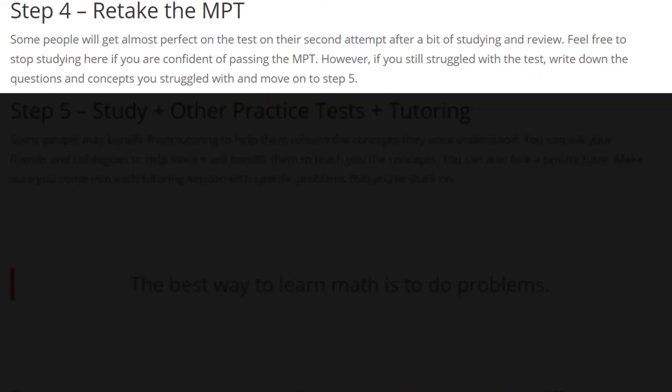Now that we've studied and targeted our weaker areas, we can retake the practice test. We had a baseline, and let's say we failed or barely passed the first time — we can retake it and see how we're doing. Some people will do just fine, getting 85 or 90 in both sections, and may feel confident enough to stop studying. However, most people will either need a bit more help or will at least want to be more confident before writing the actual test.